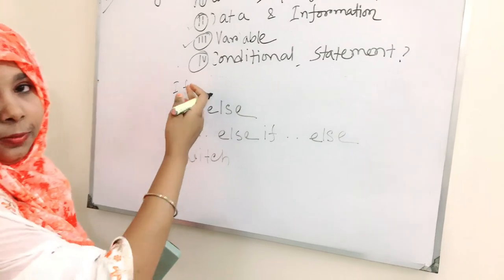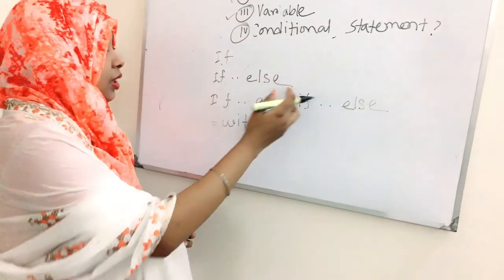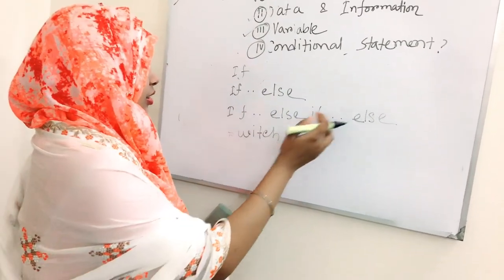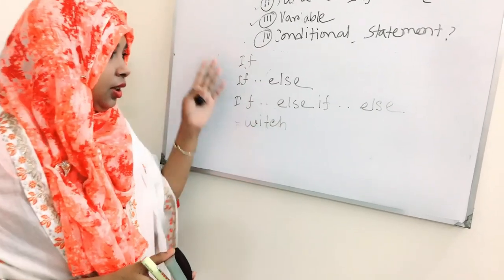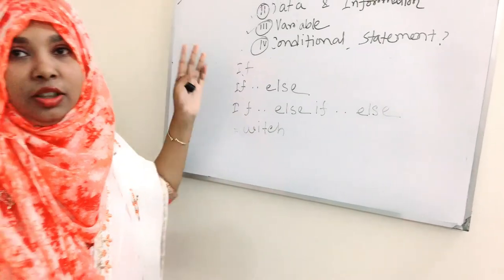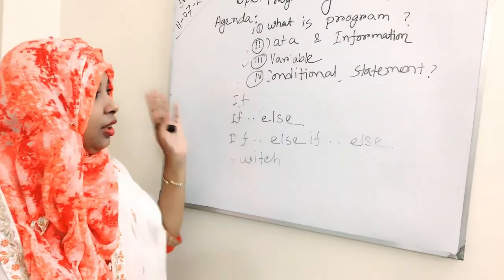First one is if, second one is if-else, third one is if-else-if-else, and fourth one is switch. They have their own structure. You have to learn their structure and then you can implement these conditional statements in your program.